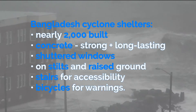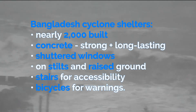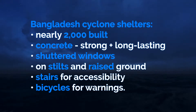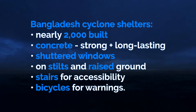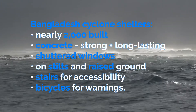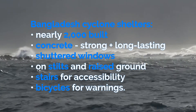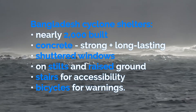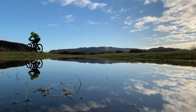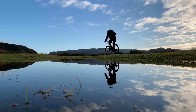In Bangladesh, nearly 2,000 cyclone shelters have been built. They are constructed of concrete as it is strong and long lasting. There are shutters over the windows to protect against high winds and flying debris during storms. They are built on stilts, which reduces the damage caused by flooding, and also built on raised ground to keep them out of storm surge waters. There are stairs to allow easy access to the building. Bicycles can be used to take warnings to remote areas. The shelters are also used as community centres, schools and medical centres for most of the time.